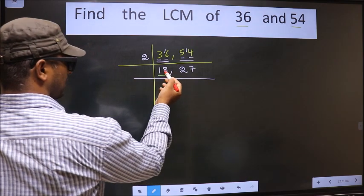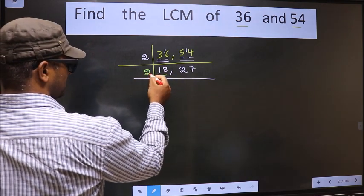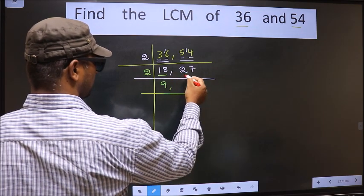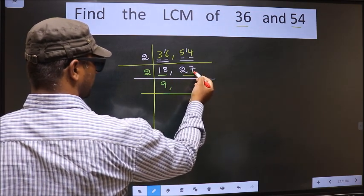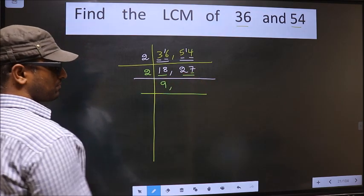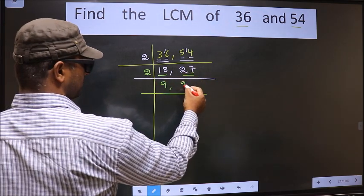Now here we have 18. 18 is 2, 9's, 18. The other number, 27, last digit 7, not even, so this number is not divisible by 2. So we write down 27 as it is.